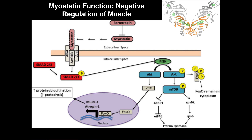Of course, there are people in the weightlifting and bodybuilding community that would actually like to just inhibit this protein to accelerate their muscle mass — you could consider that an alternative to human growth hormone or anabolic steroids. But that's most likely not safe because myostatin also has functions in bone and the heart, and you would not want to mess with the heart too much. So hopefully this video gave you a good understanding of myostatin. Please make sure to like this video and subscribe to my channel for future videos and notifications. Thank you.